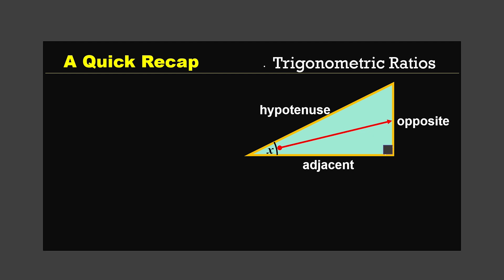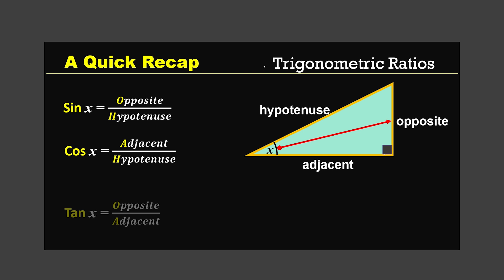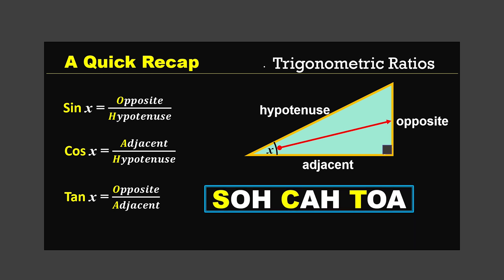The next concept is trigonometric ratios. There are three basic trigonometric ratios: sine, cosine, and tangent. Sine of angle x is the ratio between the opposite and hypotenuse. Cos of x is the ratio between adjacent and hypotenuse. Tan of x is the ratio between opposite and adjacent. All three trigonometric ratios can be remembered using the short form SOH-CAH-TOA, which you are already familiar with.